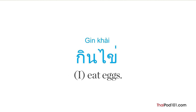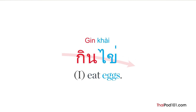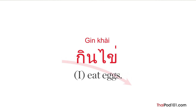Gin kai — I eat eggs. The first word of this sentence, gin, or eat, is in middle tone. But the last word, kai, or eggs, is in low tone. You can hear that my pitch went slightly lower at the end of this sentence.